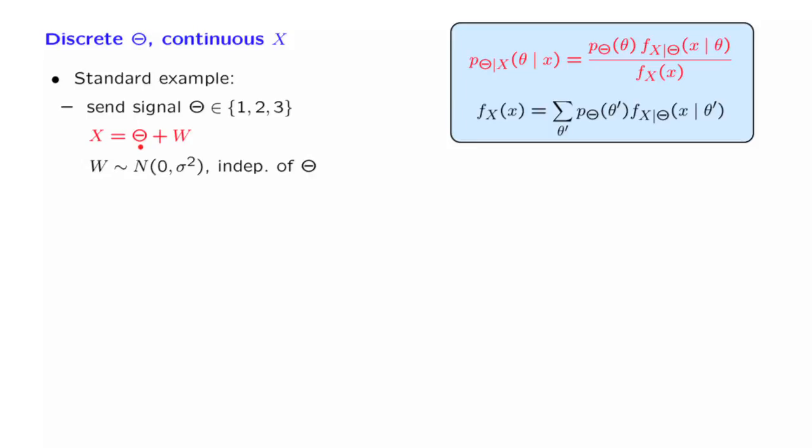This is an example that we more or less studied some time ago. Actually, at that time, we looked at an example where theta could only take one out of two values. But the calculations and the methodology remains essentially the same as for the case of three values. So in principle, we do know at this point how to apply the Bayes' rule in this situation to come up with a conditional PMF of theta.